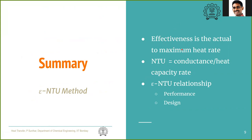To summarize the ε-NTU method: effectiveness ε is the actual heat rate divided by the maximum theoretical heat rate; NTU is defined as conductance UA divided by minimum heat capacity rate C_min. The relationship between ε and NTU for various heat exchanger configurations is available in charts and tables. This relationship is used to calculate either performance — finding outlet temperatures or heat rate — or design, finding the required area.